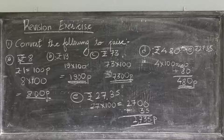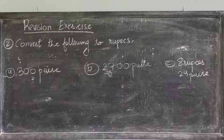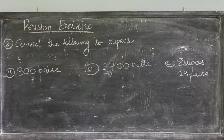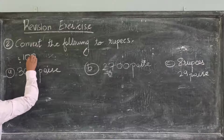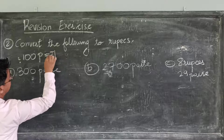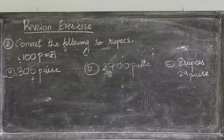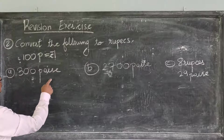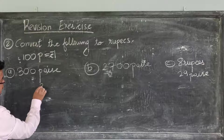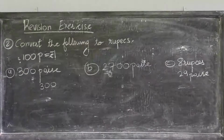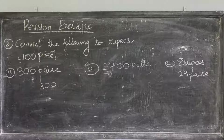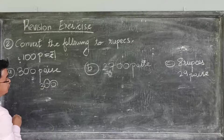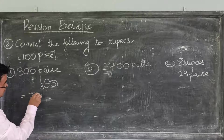Now we will look at number 2: convert the following to rupees. When we convert paise into rupees, we divide by 100. We know that 100 paise is equal to 1 rupee. To convert 300 paise into rupees, we divide by 100. Instead of dividing, you can leave 2 digits from the right and put a dot. So 300 paise is equal to 3 rupees.